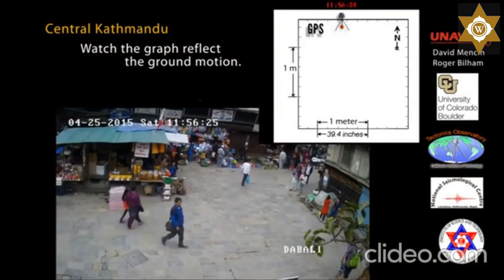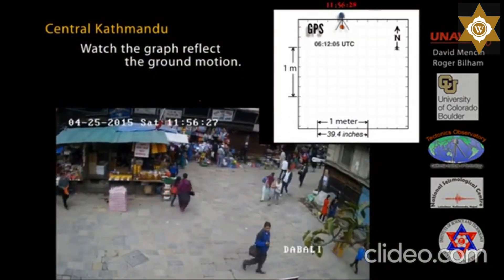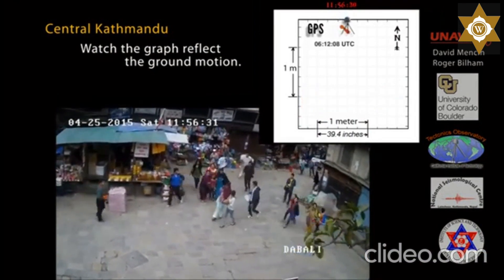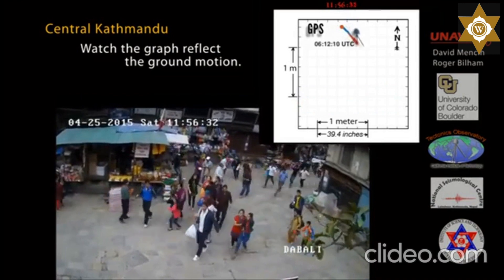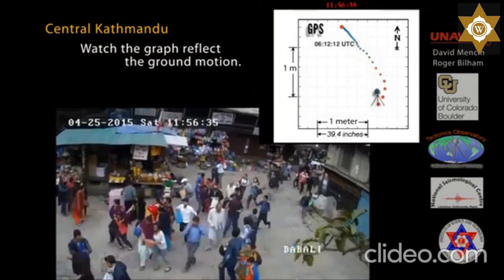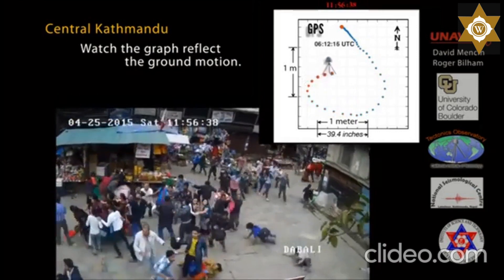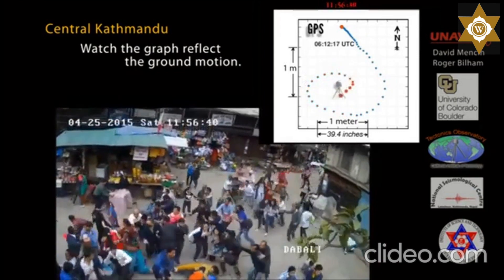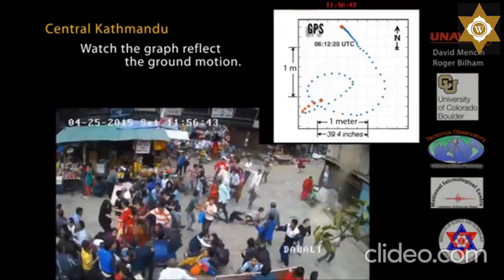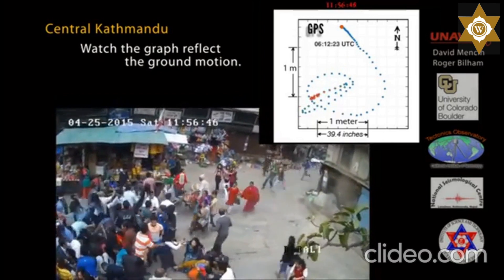A GPS station in the Kathmandu basin recorded the ground motion while video captured people's response. Following ground motion of 1.5 meters to the southeast over the first 10 seconds, the ground lurched 1.6 meters west in less than 3 seconds, causing people to stagger and some to fall. Over the next 12 seconds, the ground moved back and forth three times, with an average time of 4 seconds for each oscillation.